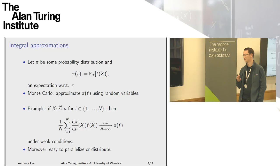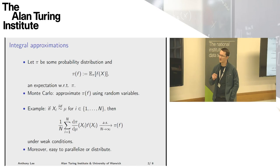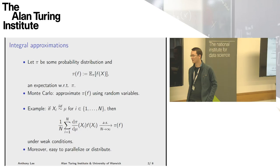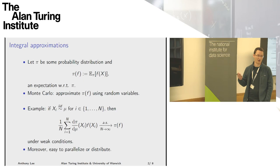This is a ubiquitous problem in many areas of physics, statistics, and numerical mathematics generally. The main idea of Monte Carlo is that there are many ways to express an expectation and to approximate an expectation when you can't compute it exactly. A wide range of Monte Carlo techniques approximate these types of expectations, integrals or sums, using random variables.